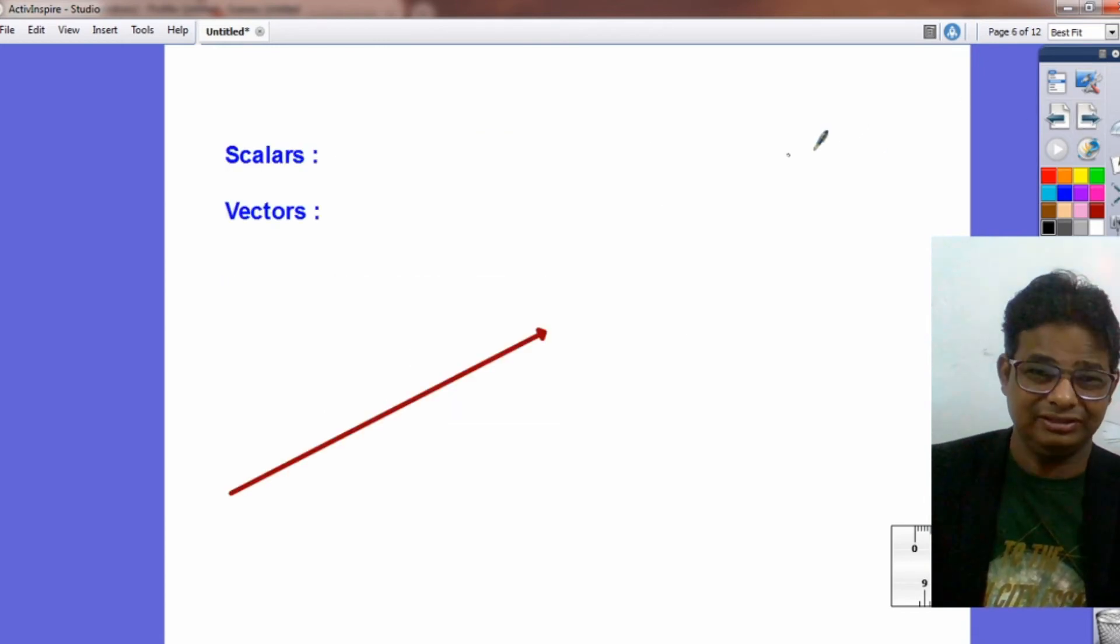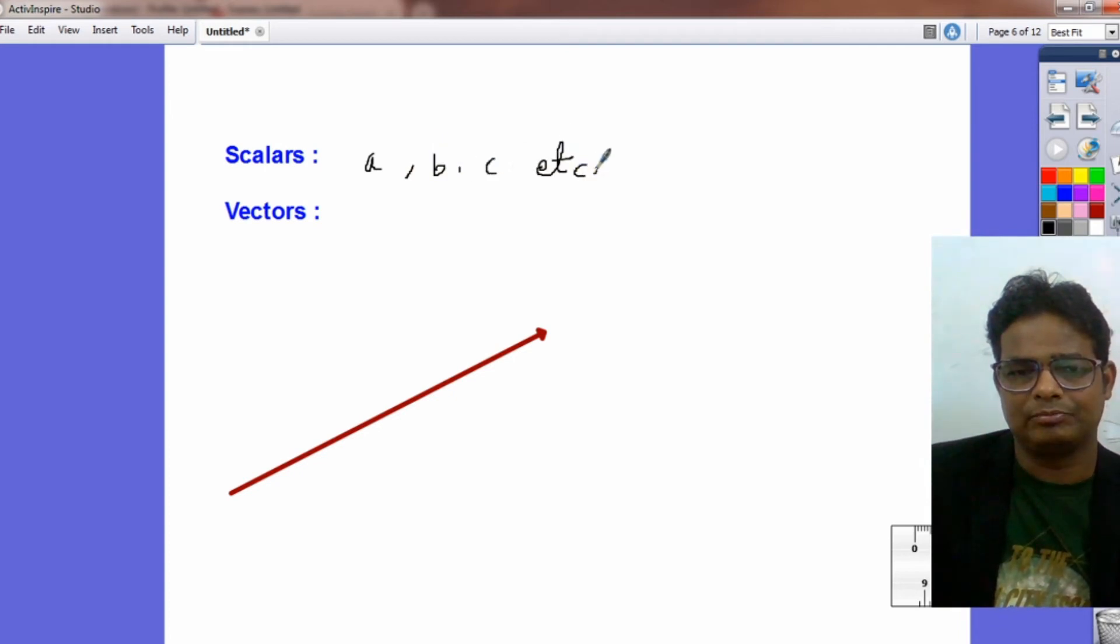Now, scalars may be represented by English alphabets A, B, C, etc. But vectors may be written as A with arrow, B with arrow, C with arrow, etc.